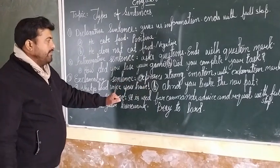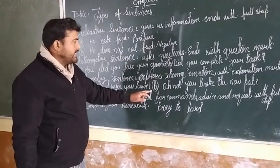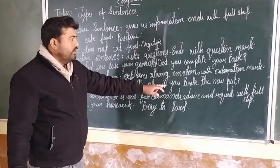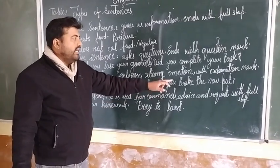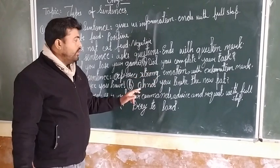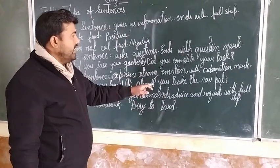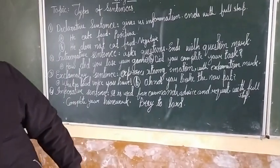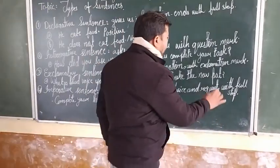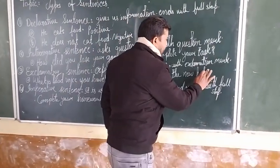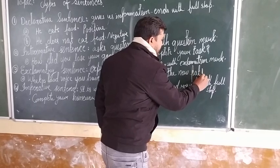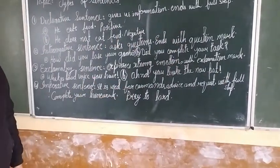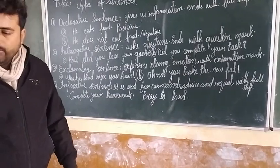The second example of an exclamatory sentence is: 'Oh no, you broke the new part!' Here you must use an exclamation mark, not a question mark — that would be wrong. You must use the exclamation mark here. 'Oh no, you broke the new part!'